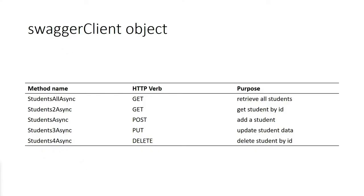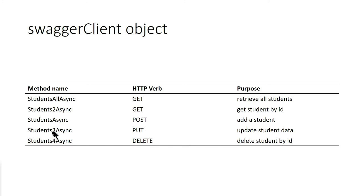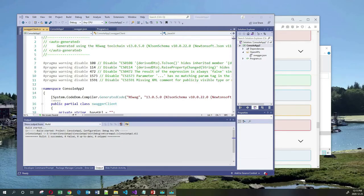In the case of our students endpoint you will find that the SwaggerClient object has five methods. The first is StudentsAllAsync, which allows you to retrieve all students. StudentsTwoAsync allows you to get one student by ID. StudentsAsync allows you to do a POST — in other words, add a student. StudentsThreeAsync allows you to do a PUT — update student data. And finally StudentsFourAsync allows you to delete a student by ID. Needless to say, these names are not very intuitive, so I hope that a translation table helps you decipher what all these methods mean.